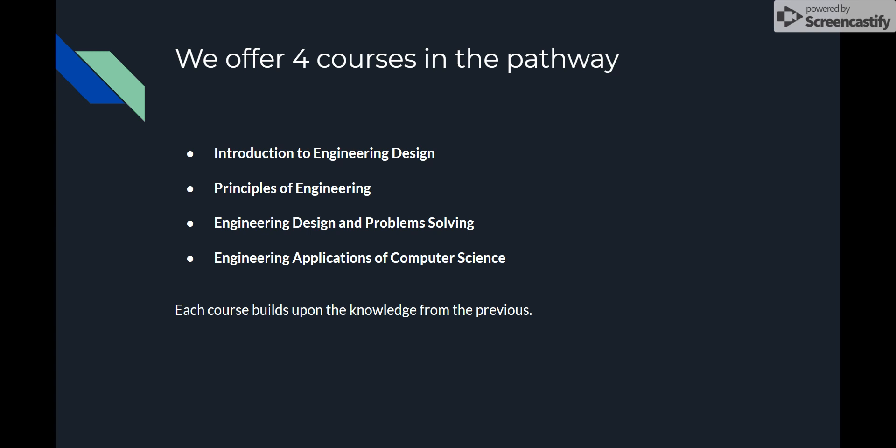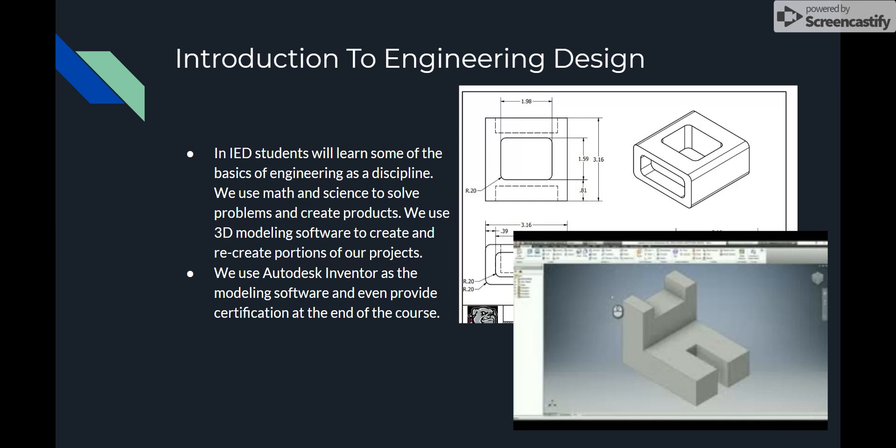The pathway at Bowie is four different courses you take throughout high school, starting with a course called Introduction to Engineering Design, then Principles of Engineering, Engineering Design and Problem Solving, and Engineering Applications of Computer Science. Each of these is required to take the next, and each is challenging in their own way. Each course is built upon the knowledge you learn in the previous, which is why they are in sequential order.